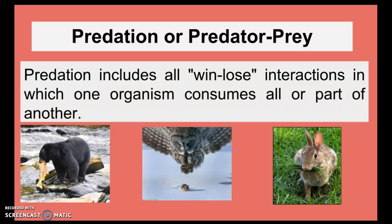First we have predation, or the predator-prey interaction. This is a win-lose interaction in which one organism is consumed — one organism does the consuming, does the eating of all or part of another organism. For example, we have the black bear and the salmon, the owl and the mouse. And it's hard to imagine, but it's actually a predator-prey interaction when a rabbit is eating grass — the grass is an organism that is being preyed upon by the rabbit.